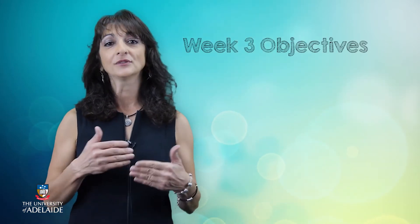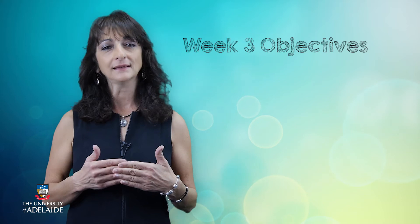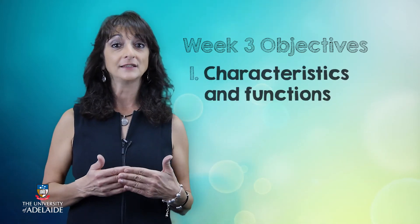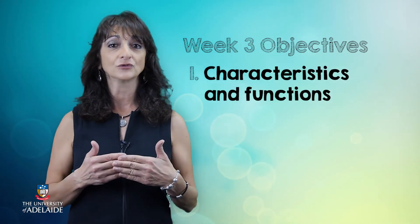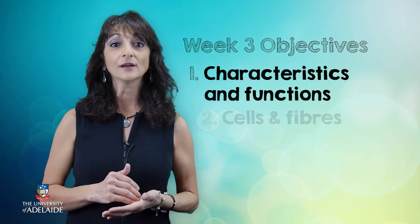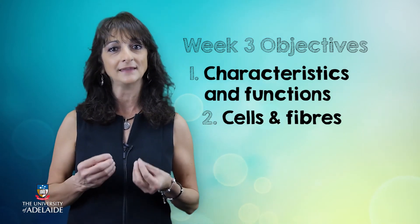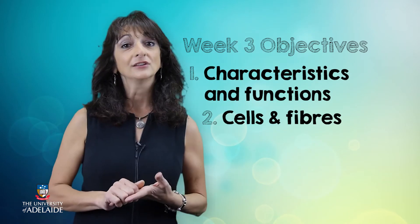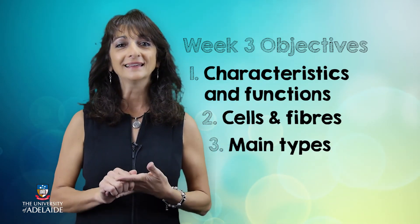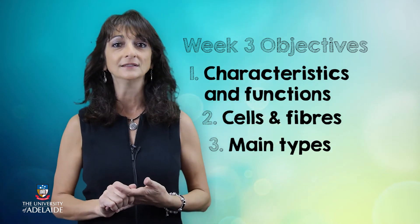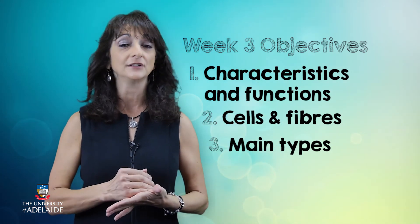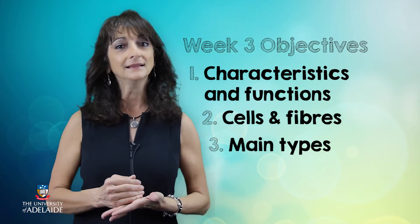We now know how diverse this tissue type is and how abundant it is in our body. I hope that as you progress through our lessons you can now comfortably identify the different characteristics and functional properties of connective tissue, discuss the types of cells and fibres found in different locations of connective tissue that give it its distinctive properties, and confidently identify and characterise the main types of connective tissues — connective tissue proper, blood, and skeleton.